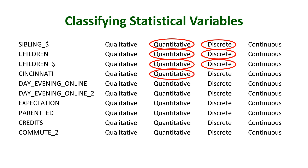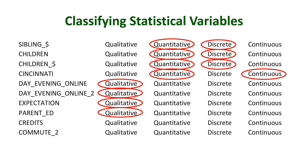Cincinnati is quantitative and continuous because we are measuring how much a student likes Cincinnati. Day_evening_online is qualitative and the recoded version is also qualitative. Expectation is qualitative — if you don't remember what these variables mean, you can always look at the variable key. Parents' education is qualitative. Number of credits taken is quantitative and discrete — you can't take thirteen and a half credits, you take thirteen or fourteen. Commute time is quantitative and continuous since we are measuring time. That concludes the classification of the first thirty variables in the student survey.